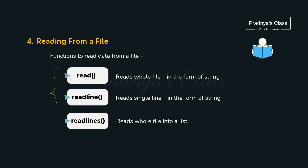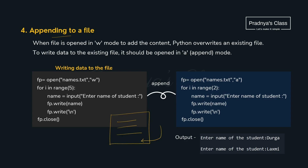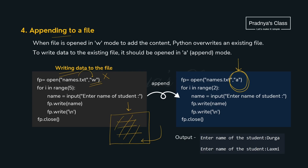There is one more operation: appending data to the file. If a file already exists with some data and you want to add more, we append data to it. The process is the same as writing, with one key change — the mode will be A, not W. If you open an existing file in W mode, the previous data will get erased. So we should open an existing file in A mode to append data without losing what's already there.